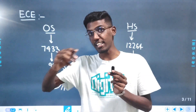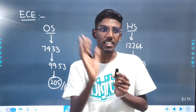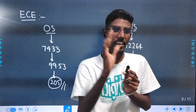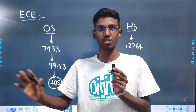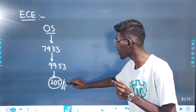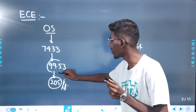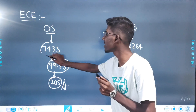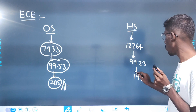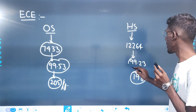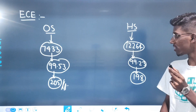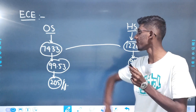The main thing is the advantage and disadvantage. ECE is 205 marks at 99.53 percentile and 7,400 rank. Homestate is 198 marks at 89.23 percentile, giving a 12,000 rank. The difference is about 5k rank.